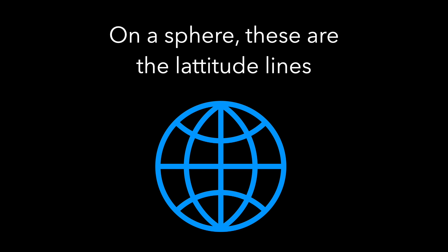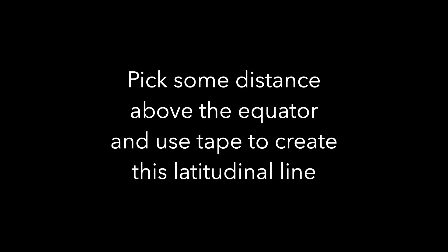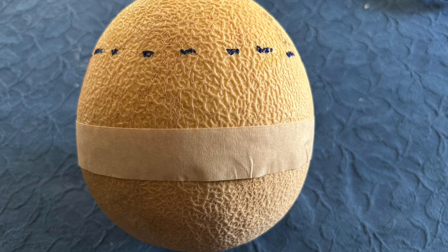These latitude lines are the same distance from the equator. Let's go back to our cantaloupe and try doing this with masking tape. The first line is the equator, and let's pick some distance above the equator and use tape to create this latitudinal line. Here I've marked out a distance above the equator to help me, and now I'll start laying the tape.